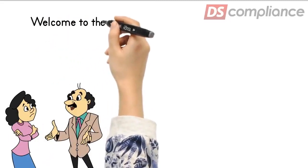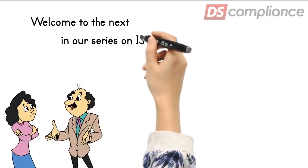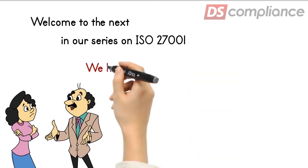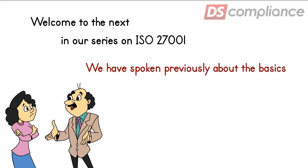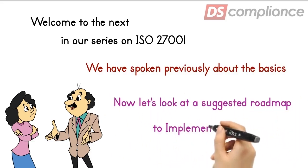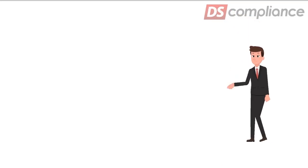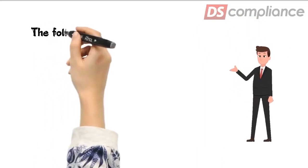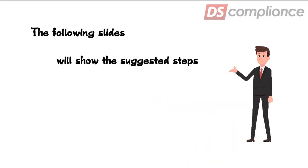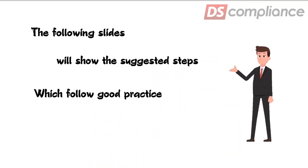Welcome to the next in our brief series about the Global Standard for Information Security, ISO 27001. In other presentations we have spoken briefly about the basics of what is required to implement the standard in your organization. In this part, we want to go into a little more detail and will show you a suggested roadmap to implementation. Just remember, this is not an exhaustive list, neither is it the only way to implement the standard, but it does follow good practice. There are 18 steps in total, and we will show them over the next three slides.